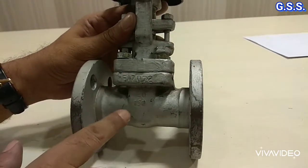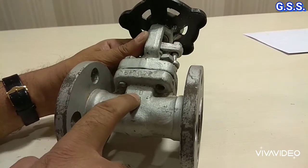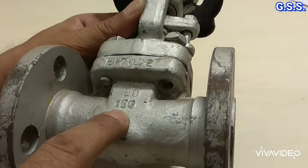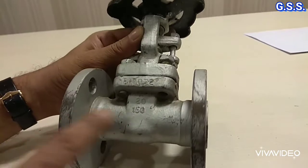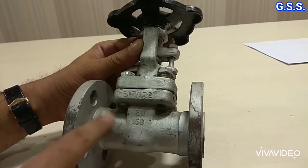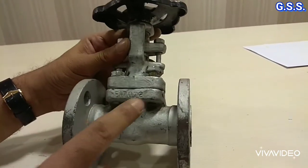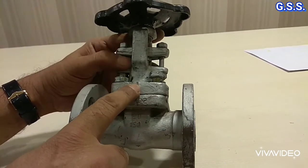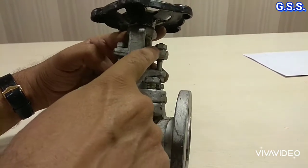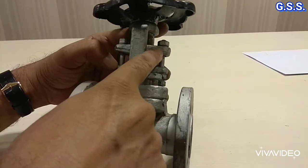This is a 3/4 inch, 20 NB, 150 pound flanged gate valve made of carbon steel. It is white painted. This is the body. This is the bonnet and this is the gland portion. This is the gland flange.